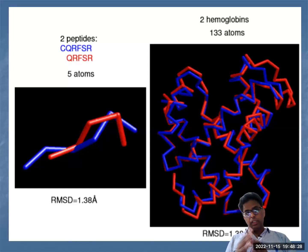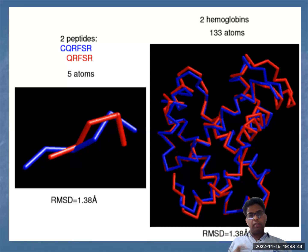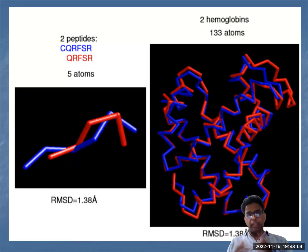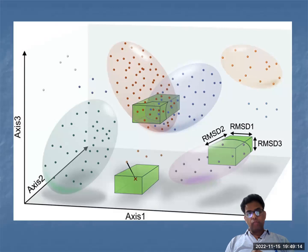Here is an example with two molecules — two peptides, such as two hemoglobin structures with 133 atoms. Both have the same RMSD of 1.38. Five atoms may look highly dissimilar, but 133 atoms look similar. So as the size increases, RMSD gives better information. RMSD is measured along the x, y, z axes, and the cumulative deviations give better information about residue distance between two structures.